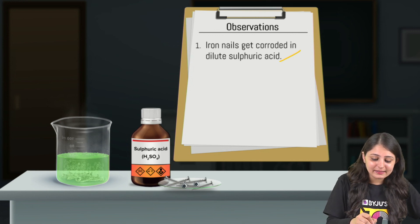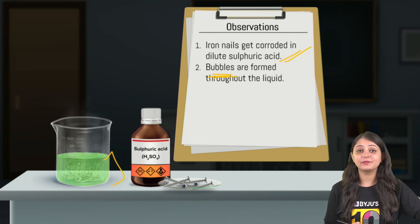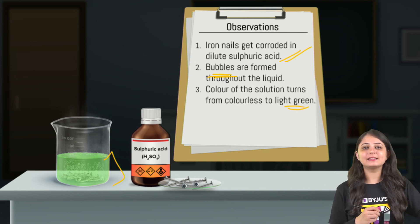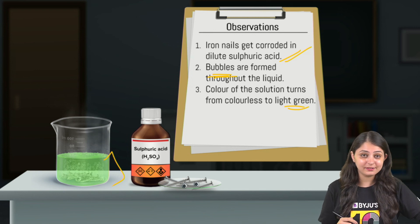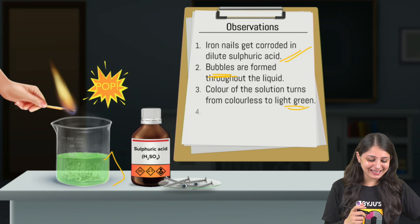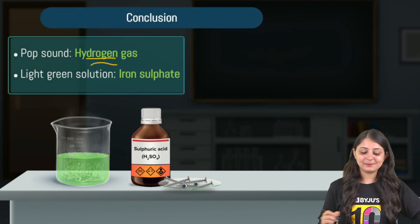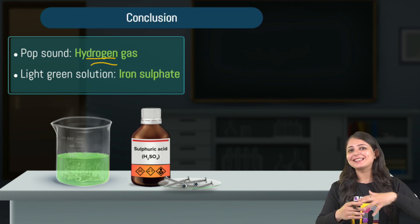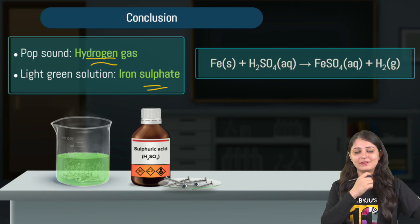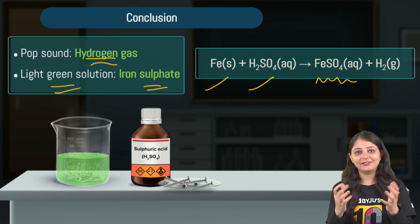First, iron is getting corroded in the presence of acid. Second, bubbles are being formed when iron is added to sulfuric acid. Third, the color of the solution has changed to light green. Fourth, when a burning matchstick is brought near the gas, a pop sound is produced — this indicates the presence of hydrogen gas, which is colorless, odorless, and combustible. The light green solution is ferrous sulfate.